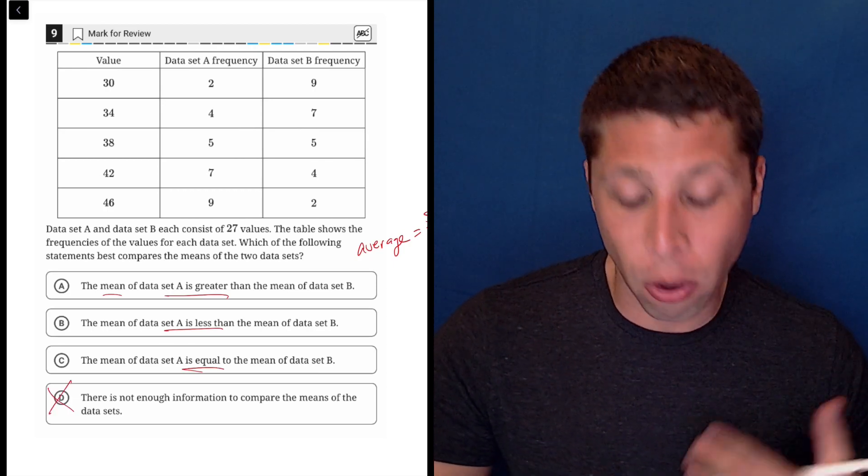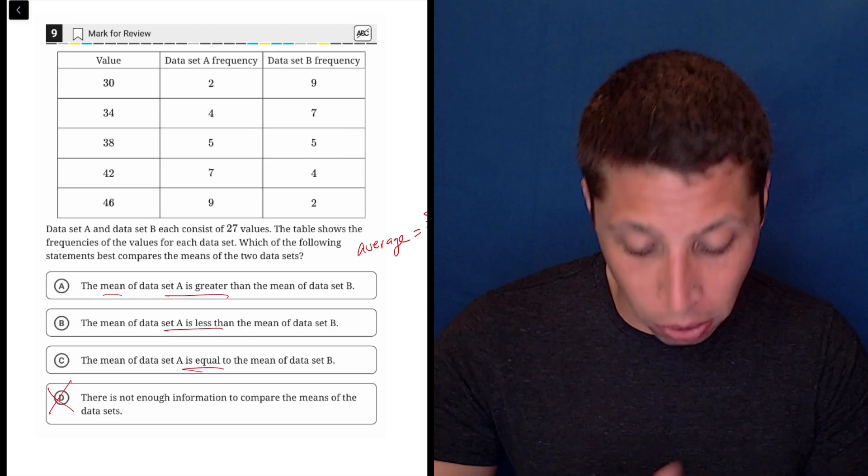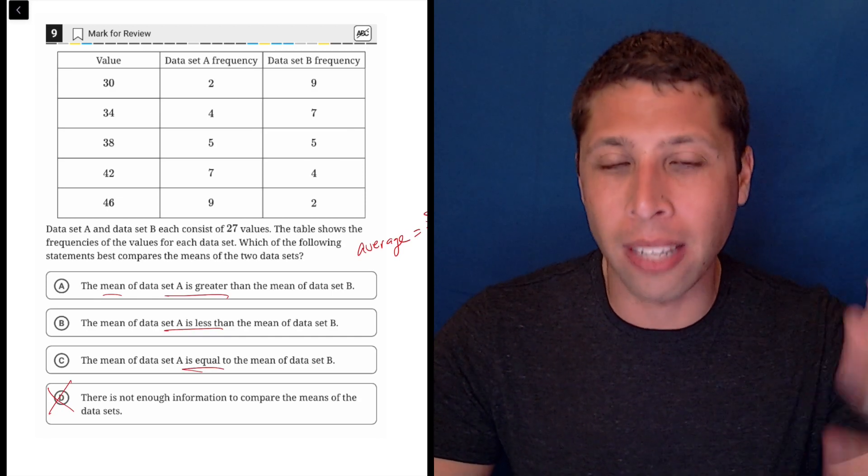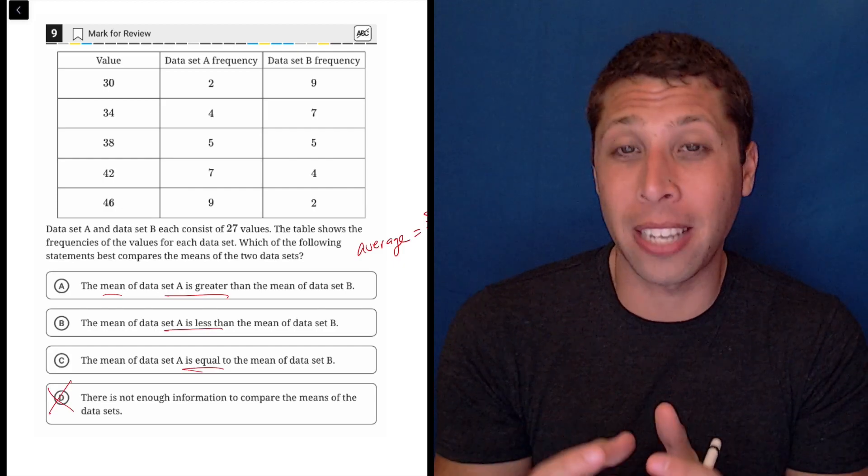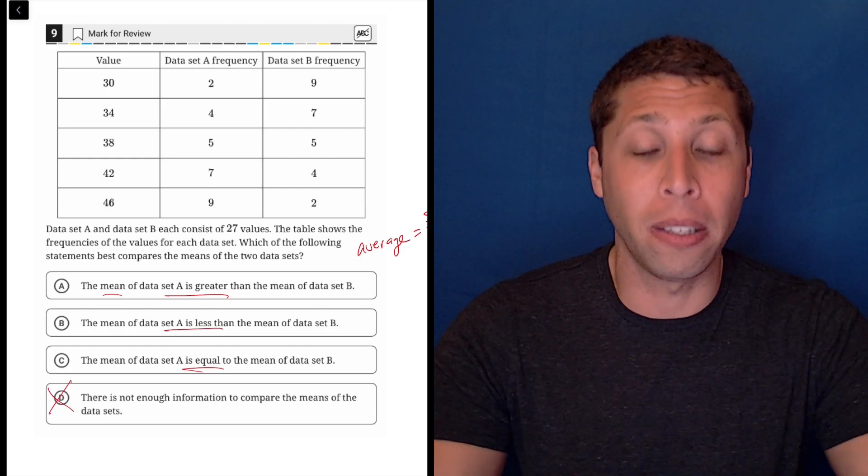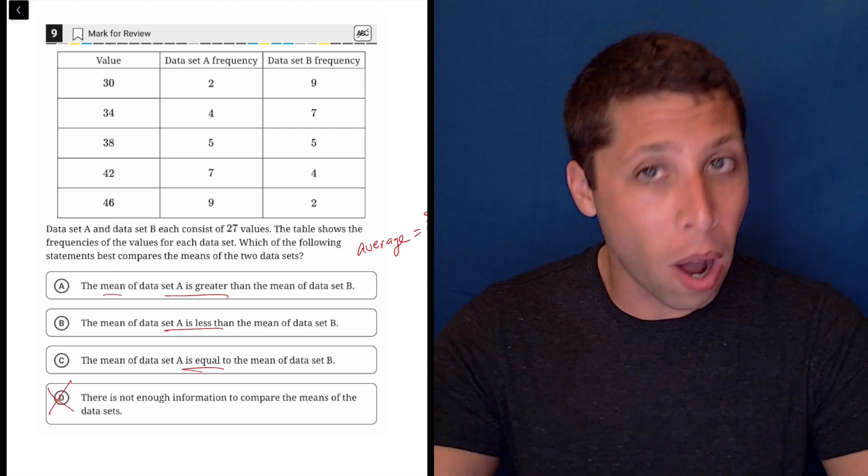We have everything we need. We have all the values. For set A, there's two thirties, four thirty fours, five thirty eights. So the frequency chart is giving us the list of numbers. It's compressing it a bit, but we do need to know that that is given here. We do have the ability to calculate the mean if we wanted to,